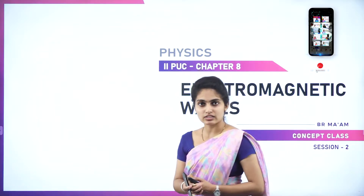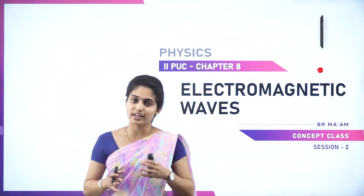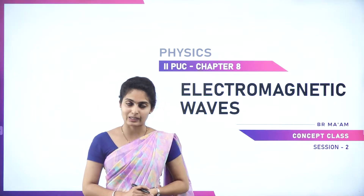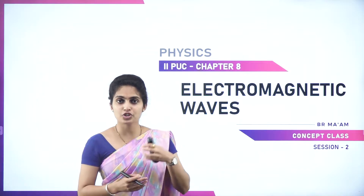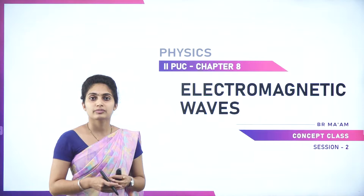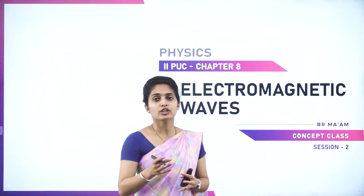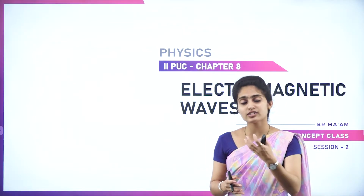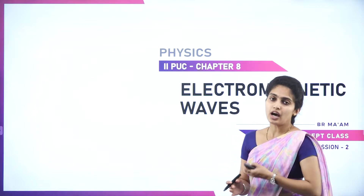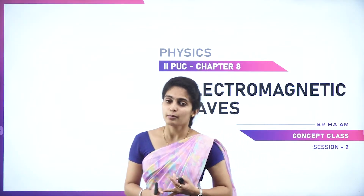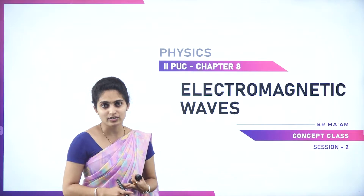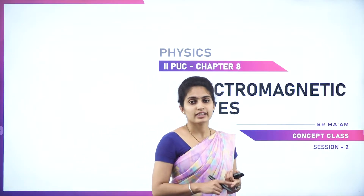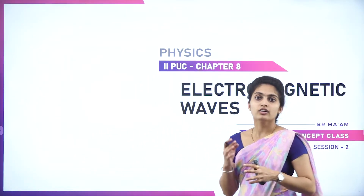In the last class, we discussed about displacement current and why it was introduced by James Clerk Maxwell. In today's class, by the introduction of that displacement current, there was the electromagnetic spectrum which was introduced. How many types are there? That is radio waves, microwaves, infrared rays, visible rays, ultraviolet rays, X-rays, and gamma rays.